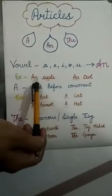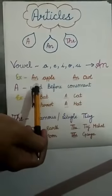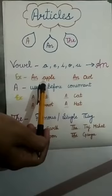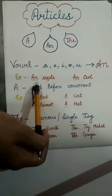Like AN APPLE, AN OWL, AN APPLE. Apple, if you see, the apple word has A alphabet which is a vowel. So we use AN.